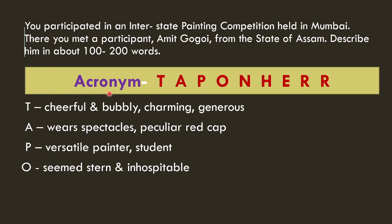To structure the description, I'll be using this acronym. If you have watched my previous videos you already know about it. I'll be using this acronym to make my rough points — it's called TAPONER, where R is a double R. One by one we will be jotting down our rough points. From T we have traits, so here I'll be including personality traits. I have chosen that Amit Gogoi is cheerful, bubbly, charming, and generous.